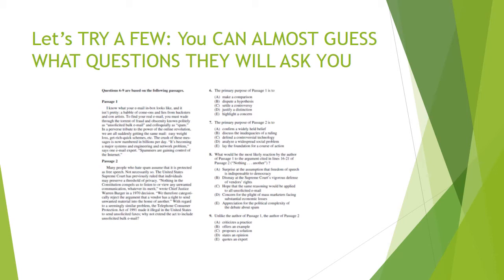Now let's look at the questions. Number six: 'The primary purpose of passage one is...' It's not making a comparison, disputing a hypothesis, settling a controversy, or justifying a distinction. Passage one was all about the spam in your email inbox, so the answer is E—highlighting a concern. For question seven, the primary purpose of passage two: it's not confirming a widely held belief (it actually does the opposite), not discussing inadequacies of a ruling, not defending a controversial technology, not just analyzing a social problem. Look at that rhetorical question at the end—'Why not extend the act?' Its real purpose is E, laying the foundation for a course of action.